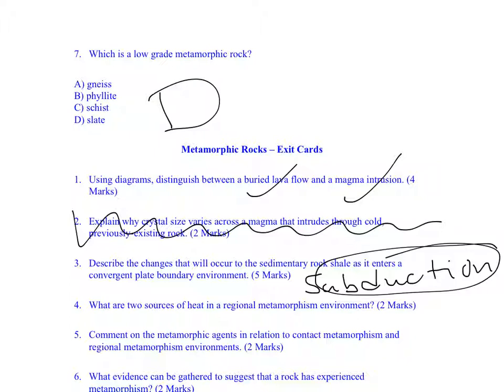Slate could get further metamorphosed and become phyllite, and then it could become schist, and then it could become gneiss. So it could go from low-grade slate to medium-grade phyllite to high-grade schist to extremely high-grade gneiss. And you should look at a diagram of a convergent plate boundary. I drew one in class that would be really good for this.